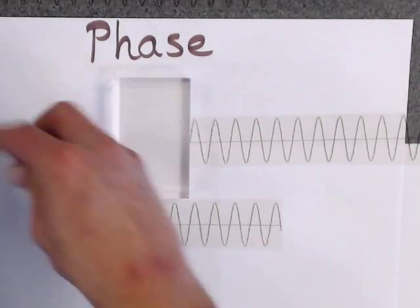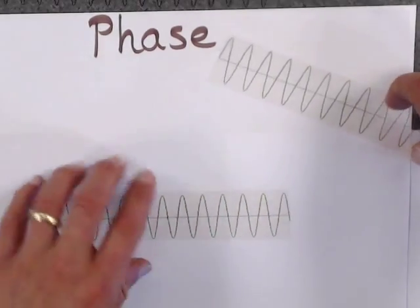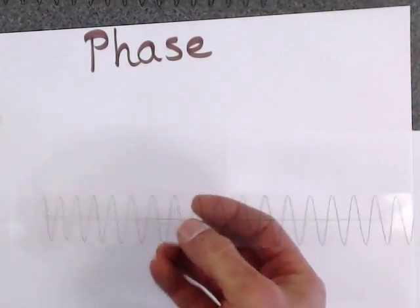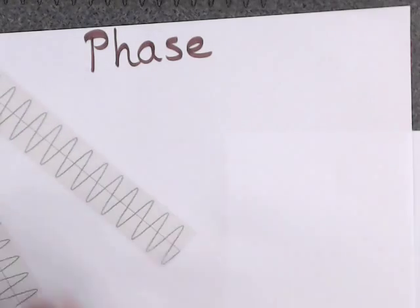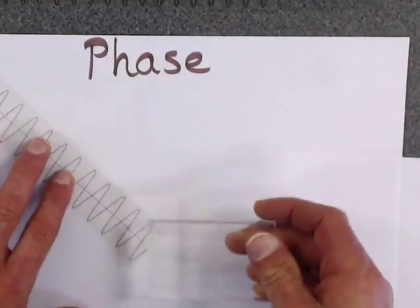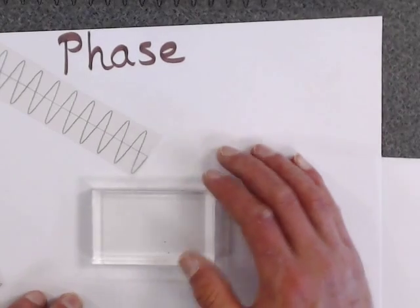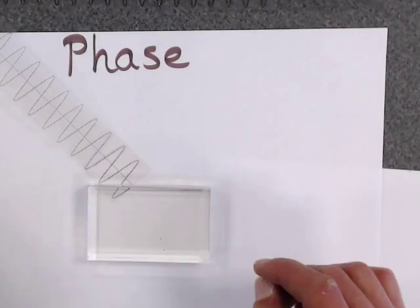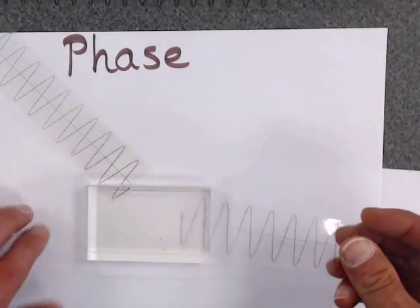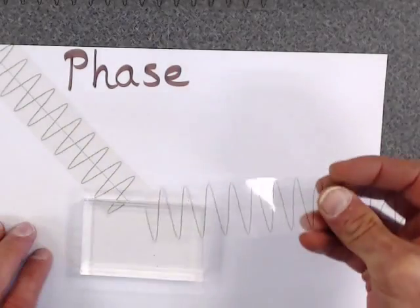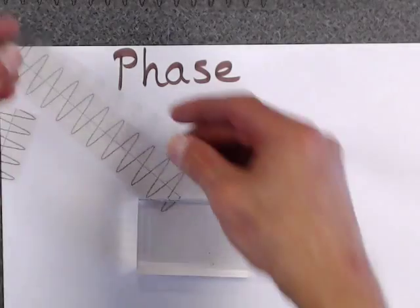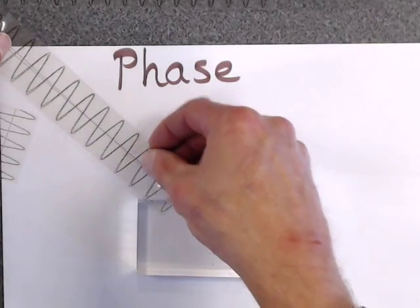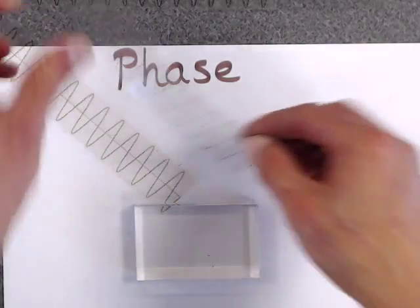Now there's another way that you can get phase shifts. The other one is through bouncing it off of a medium. So let's take that same medium. Now I'm going to send this in and bounce it off. I'm going to have some reflection. The reflection, because I'm not changing my medium that I'm in, the wavelength isn't changing. So I have the same wavelength.